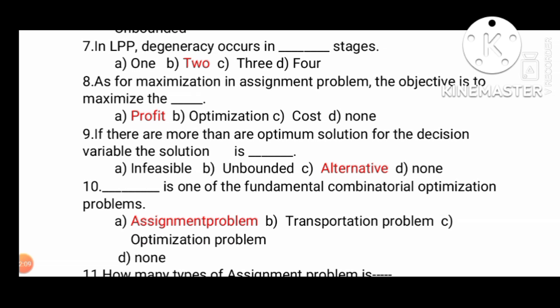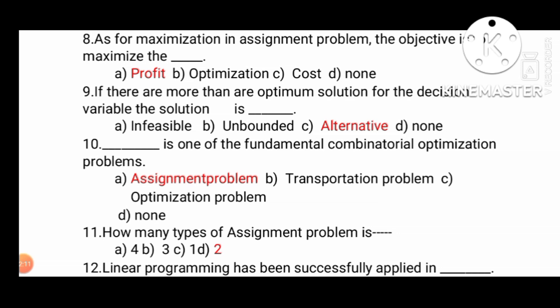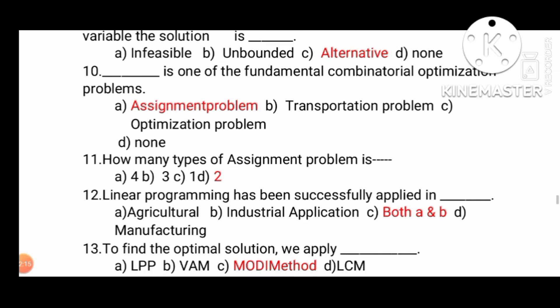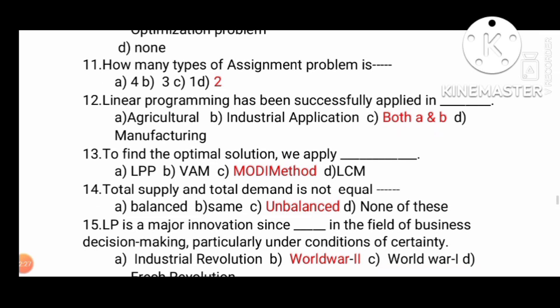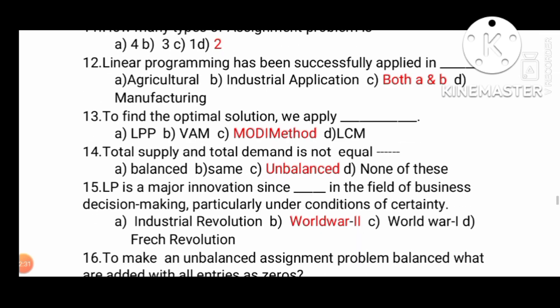If there is more than one optimum solution for the decision variable, it is alternative. One of the fundamental combinatorial optimization problems is assignment. How many types of assignment problem? Two types. Linear programming has been successfully applied in agriculture and industrial application, both A and B. To find the optimum solution we apply Modi method. This is an important question. Total supply and total demand is not equal - how many types of unbalanced are there?